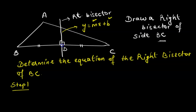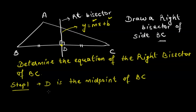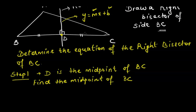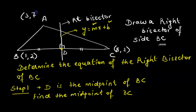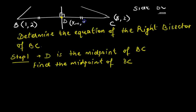Step 1 is to find the midpoint of BC — that is, the midpoint of the line segment to which the right bisector is drawn. Point D meets BC in the middle, so D is the midpoint of BC. The question gives us vertices B(1, 2), C(8, 2), and A(3, 7). Point D has coordinates (xm, ym).